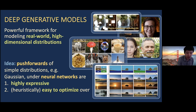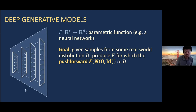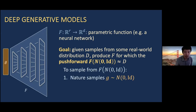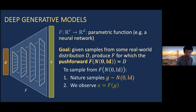To be more concrete, we can think of a deep generative model as parameterized by some function f — think of it as a neural network. The goal in deep generative modeling is: given samples from some real-world distribution d, produce some network f for which the push forward f of Gaussian approximates d. To draw a sample, nature samples some Gaussian vector g in r dimensions, and what we observe is the output of f under input g. We do not observe the latent variable g — we only observe the sample x.